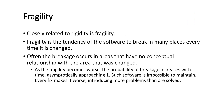When there are thousands of modules in a particular software, lots of dependencies get created over time because changes are made by different developers and software engineers. As fragility becomes worse, the probability of breakage increases asymptotically approaching the value of one. Such software is impossible to maintain. Every fix makes it worse, introducing more problems than it solves. These are the first two symptoms by which we can say our design is getting worse each day.